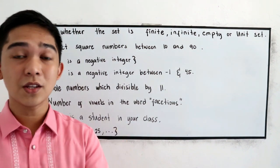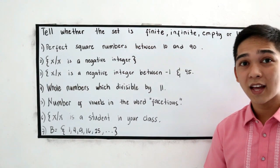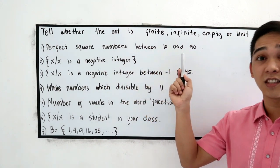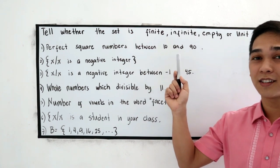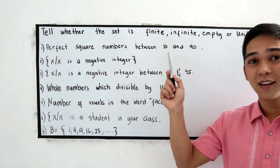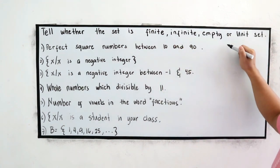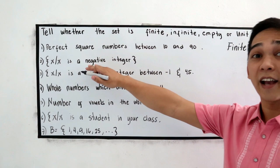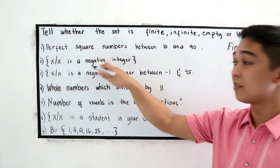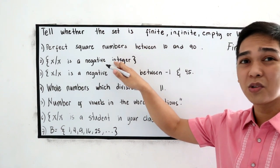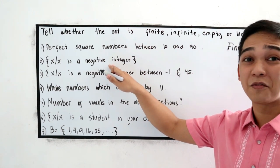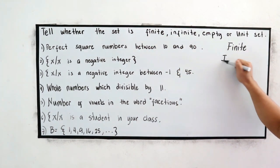So you can close the video then, since you are done now let's check your work. Number one, perfect square numbers between 10 and 90. Can we count the elements with the perfect square numbers between 10 and 90? Yes, that means this is an example of finite set. Next number two, x such that x is a negative integer. Can we count those numbers negative integer? Negative numbers are infinity numbers so this is infinite. Number two is infinite.